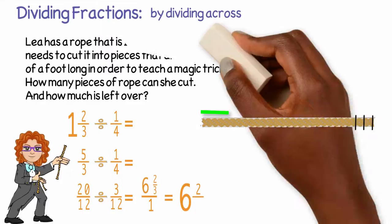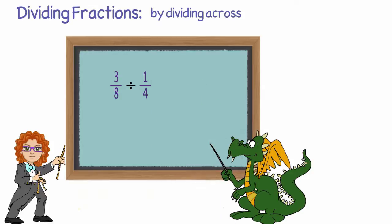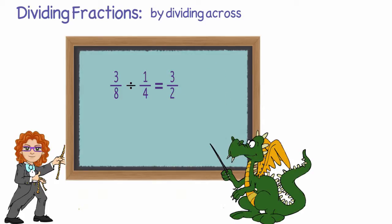Let's consider one more situation. What if we had three eighths divided by one quarter? Do we need to get a common denominator? Well, not really. Three divided by one is three and eight divided by four is two, so the answer is three halves.